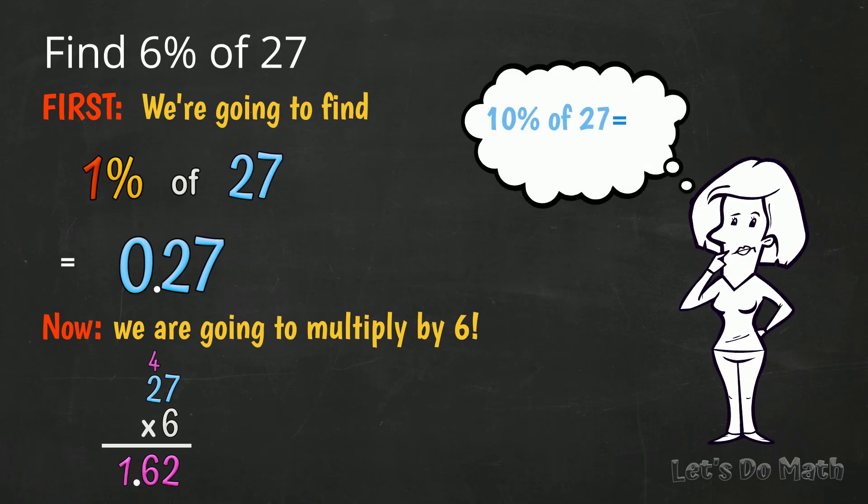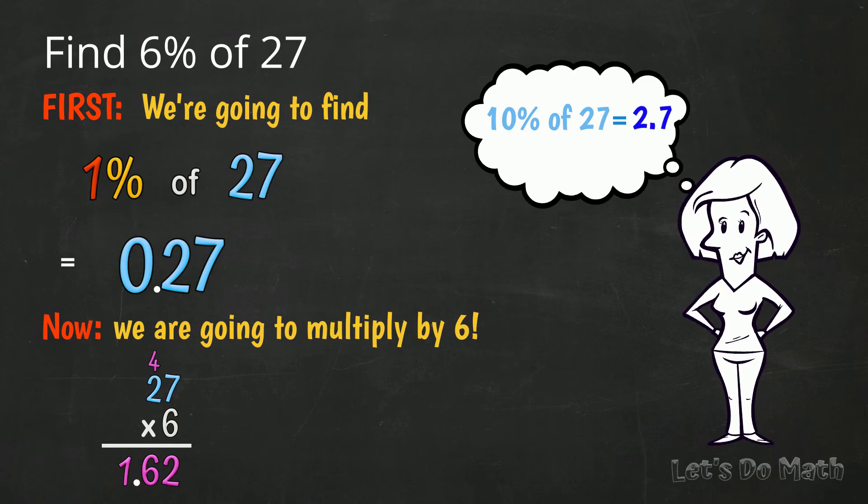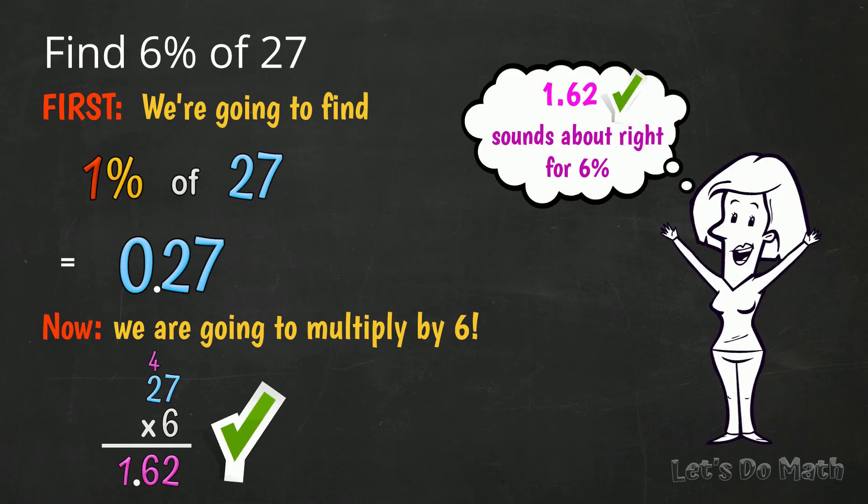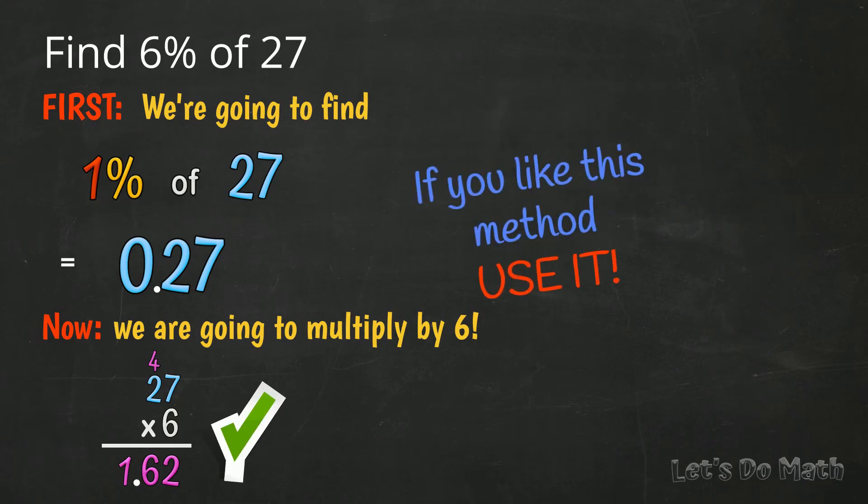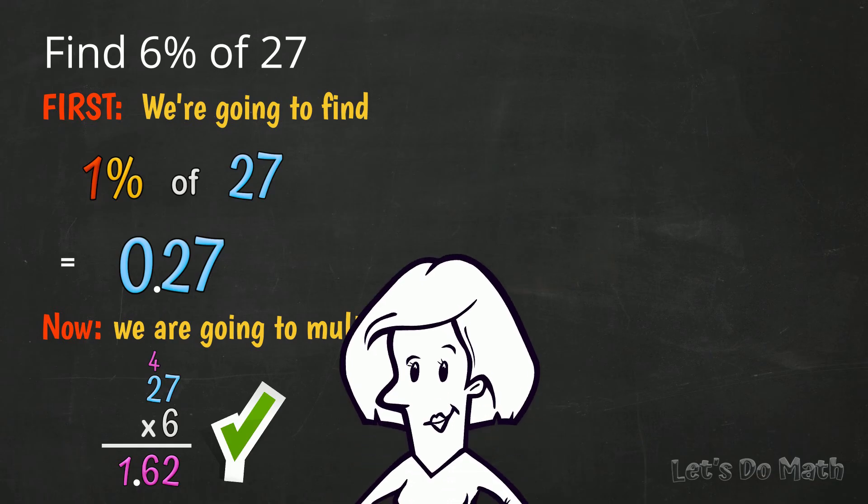10% of 27 would be 2.7. Our answer of 1.62 sounds about right for 6%. And it is right! If you like this method, use it! And look at this!